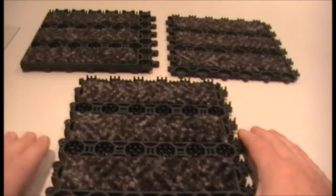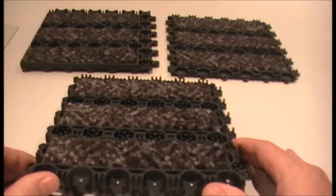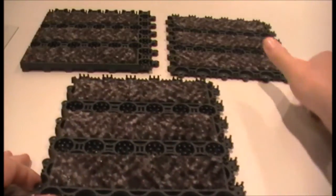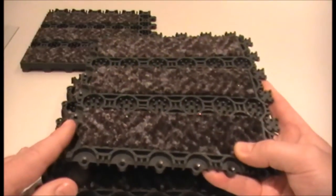Forma comes in 2 gauges: a 16mm gauge for matwells 16mm and deeper and an 11mm for matwells 11-15mm.